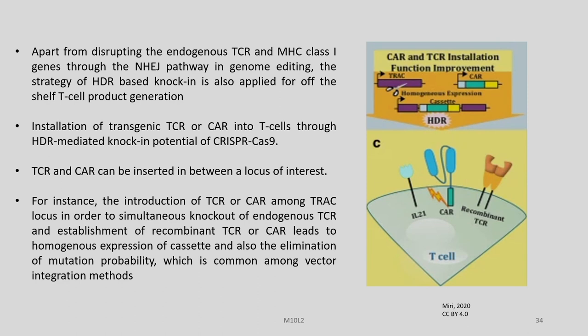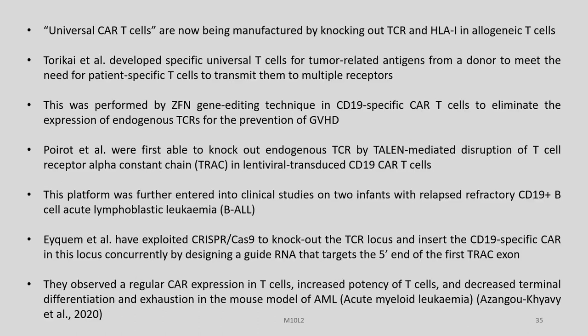Installation of transgenic TCR or CAR T-cells through HDR-mediated knock-in using the potential of CRISPR-Cas9: TCR and CAR can be inserted into a locus of interest. For instance, the introduction of TCR or CAR into the TRAC locus simultaneously knocks out the endogenous TCR and establishes recombinant TCR or CAR, leading to homogenous expression of a cassette and the elimination of mutation probability which is common among vector integration methods.